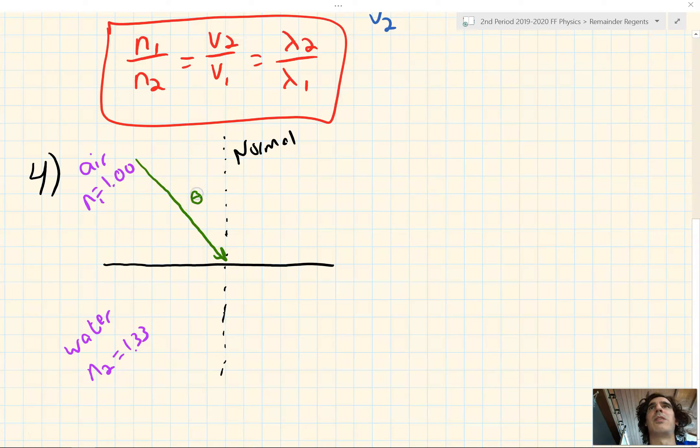And we want to find θ₂, the angle of refraction. It's going from a low to a high, 1.00 to 1.33, which means it's going to slow down, which means the angle will decrease relative to 30 degrees relative to the normal. So why don't we start with Snell's law.